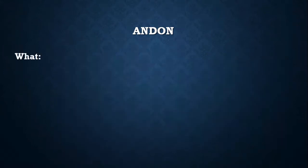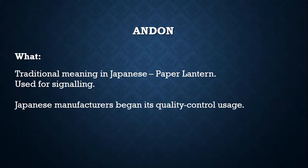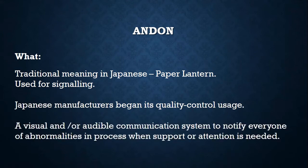So, what is Andon? In Japanese, its traditional meaning is paper-lined-in, which were used for signaling long back in history. Japanese manufacturers learned from history and adopted it as a quality control tool. Andon is an audio-visual or only visual communication system to notify all involved about any process abnormality when support or attention is needed.